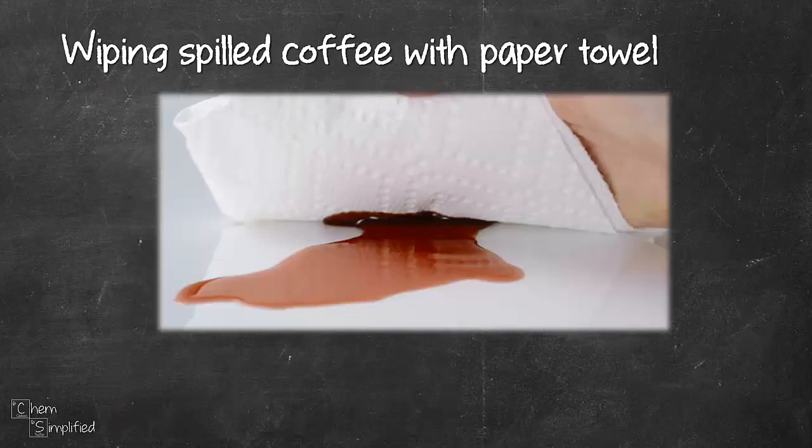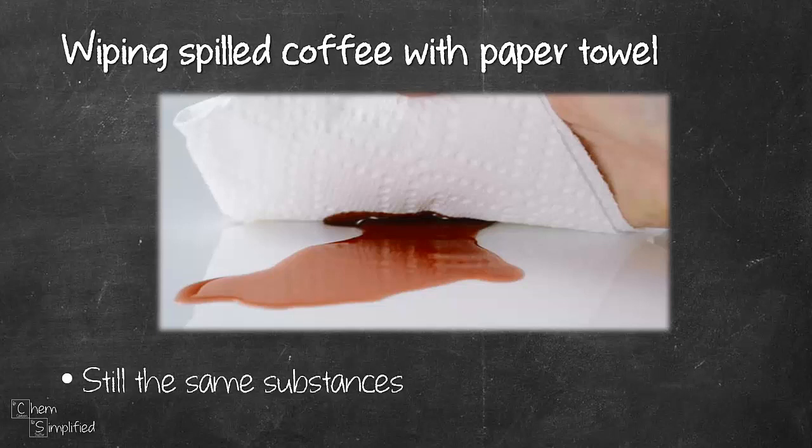Then I use that piece of paper towel to wipe the coffee that I spilled. So after wiping, coffee was absorbed onto the paper towel. But the chemical identities of both my coffee and my paper towel remain the same. Paper towel is still paper towel and the coffee is still coffee. It's just absorbed onto the paper towel.